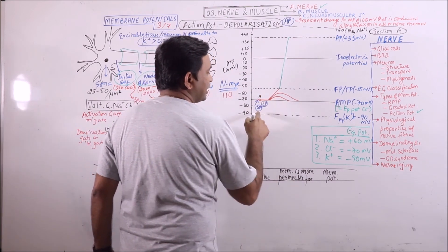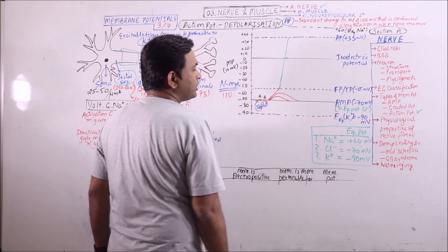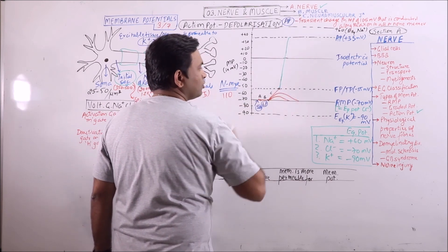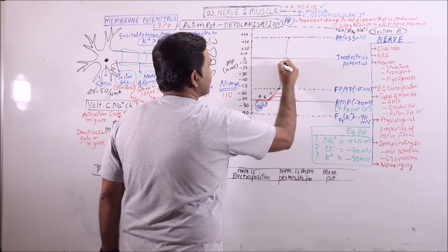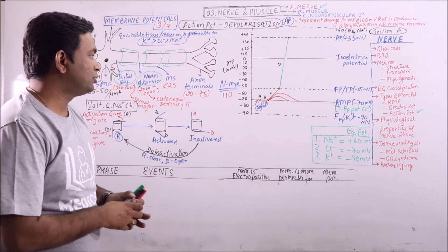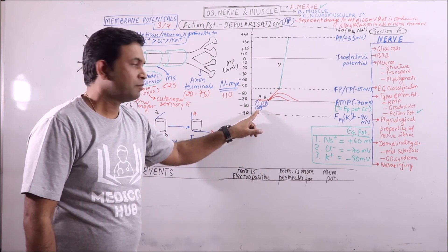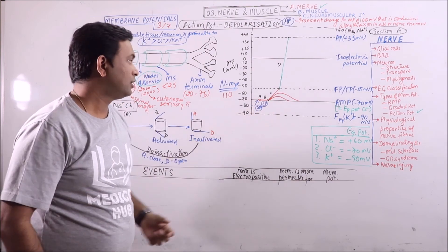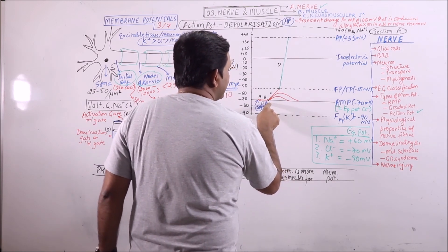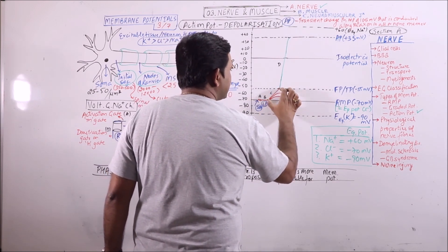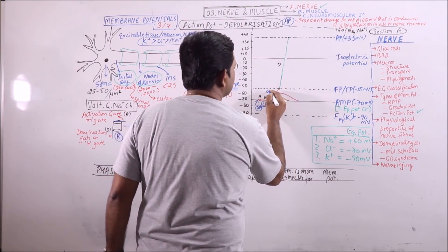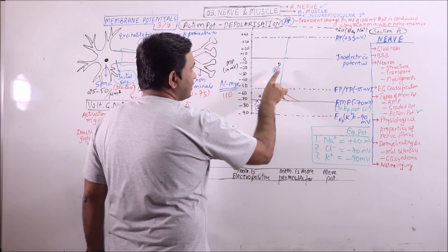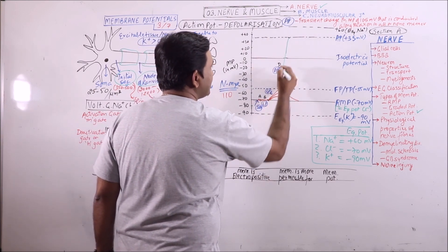On the graph: A is the stimulus artifact — that is minimum fluctuation in the membrane potential. B is the latent period, followed by a phase of isoelectric potential. C is the graded potential. D is the action potential. So the depolarizing phase of action potential includes both C and D — C is the graded potential, and D is because of the opening of voltage-gated sodium channels.